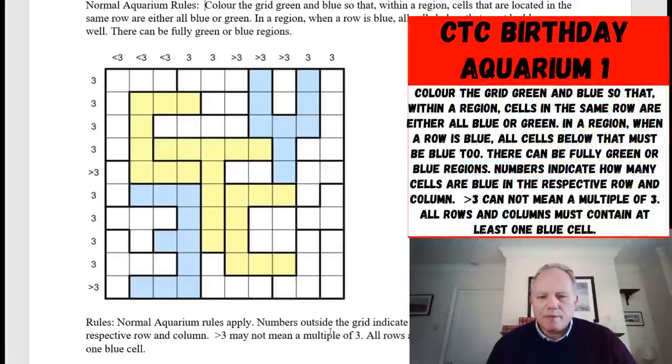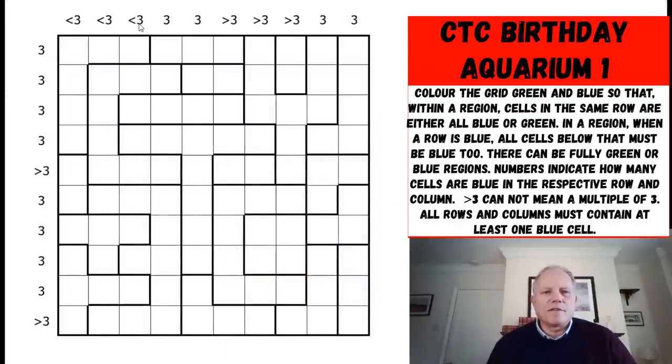So the less than threes cannot be zero, they must be one or two. But how does the green and blue thing work? Well, the way to consider it and why it's called an aquarium is to imagine water. So if you had a blue cell here, water finds its own level. So the other two in the shape would also be blue. And you could fill everything below that in the shape as blue as well, because the water would kind of fill downwards. Now above it, you don't know, they could be blue or green, but it must be at the same level. If they were green, above them would have to be green as well, because the water always finds its way to the bottom and finds its own level. So that's how an aquarium works.